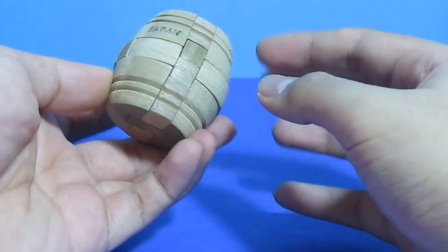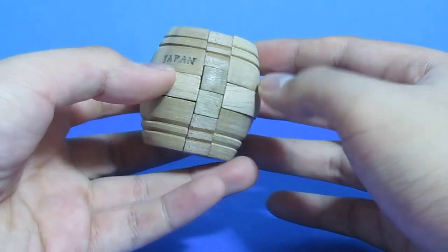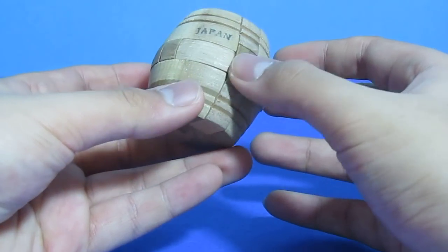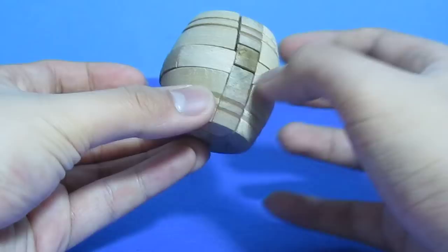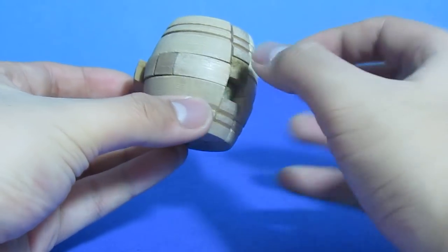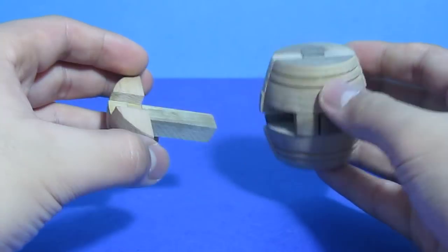Now first you'll notice you have a little barrel here. You can push here and you'll notice nothing happens. So on the other side, this is where it should happen. So there's a small spot here. If you push, you'll notice that two pieces will fall out, not just one.